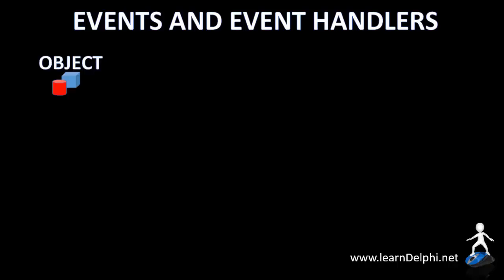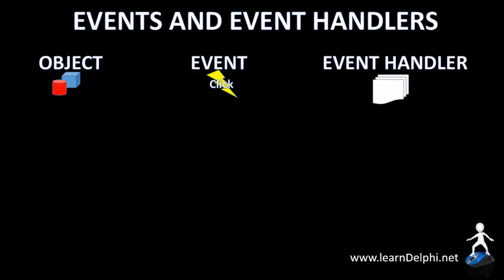In order to invoke an event in Delphi, we first need an object. That object must have one or more events that can be triggered, and the result of an event must be programmed in an event handler. An object can be an instance of a button, an edit, a bitmap button, or even an object that users can't see, like a timer.